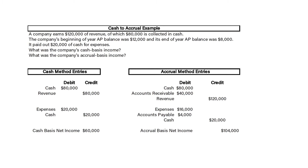Let's look at a cash to accrual example and write out the entries under the cash method and under the accrual method. A company earns $120,000 of revenue, of which $80,000 is collected in cash. The beginning-of-year AP balance was $12,000, and the end-of-year AP balance was $8,000. It paid out $20,000 of cash for expenses. Under the cash basis, we debit cash for $80,000 and credit revenue for $80,000, and we credit cash $20,000 and debit expenses $20,000. So cash-based net income is $80,000 minus $20,000, which is $60,000.